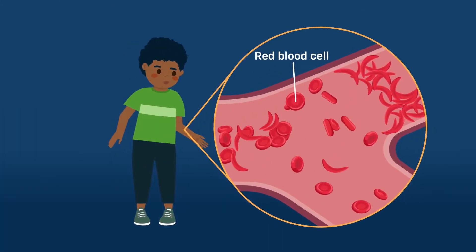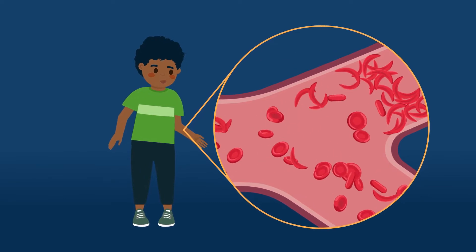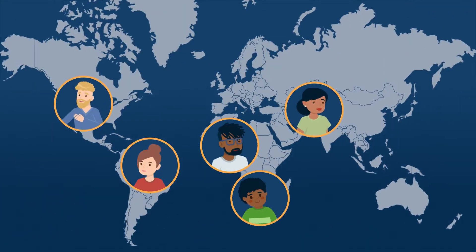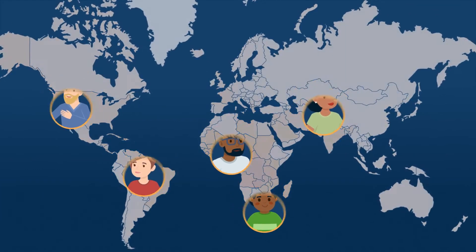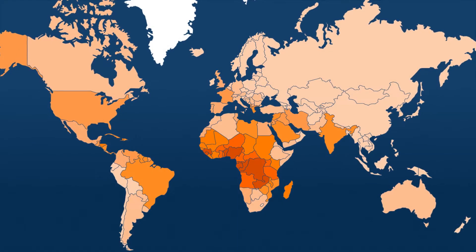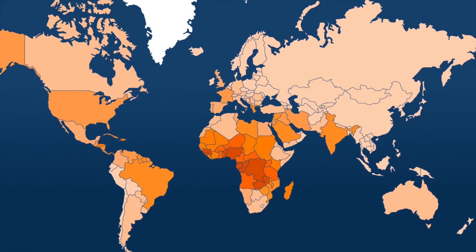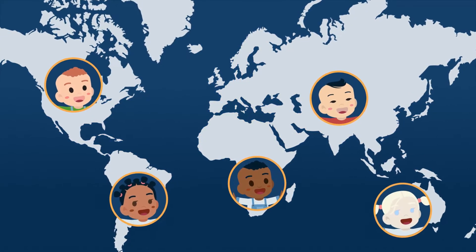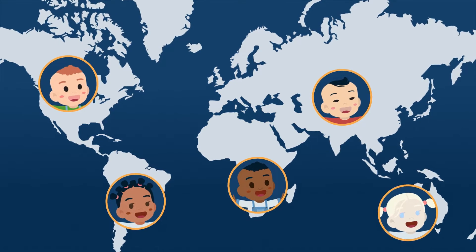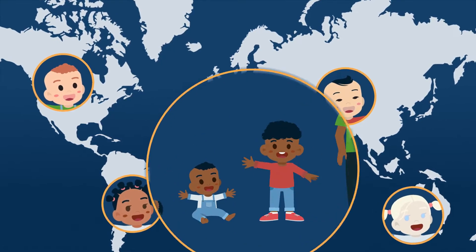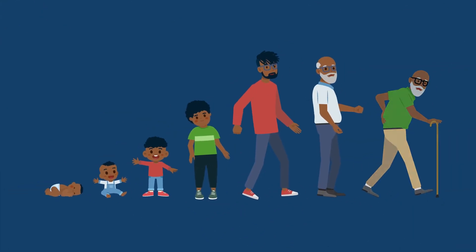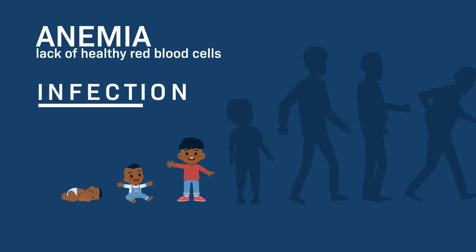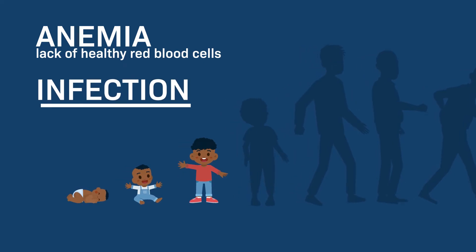Sickle cell anemia is a hereditary blood disorder that affects millions of people worldwide, especially those of African descent. Every year, more than 300,000 babies are born with sickle cell anemia. Many of them will not survive to the age of 5 due to anemia and infection.